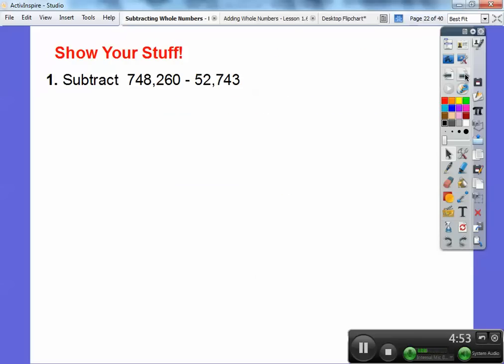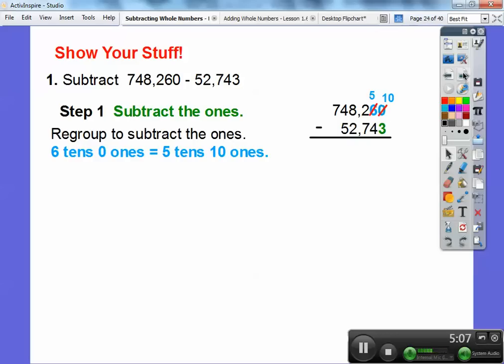Let's try one more. Let's subtract 748,260 minus 52,743. I'm going to line them up. We're going to subtract the ones. I've got to regroup. I can't do 0 minus 3. Here's 6 tens, 0 ones. I'm going to change this to 5 tens and 10 ones.